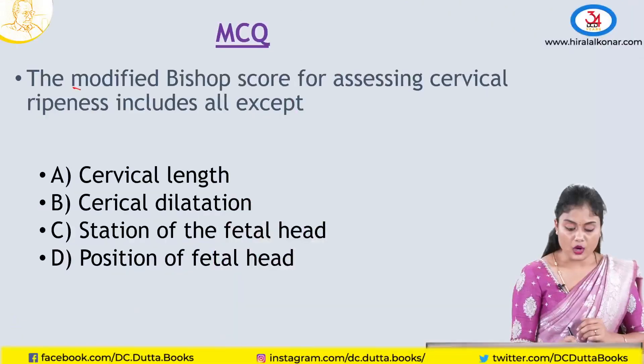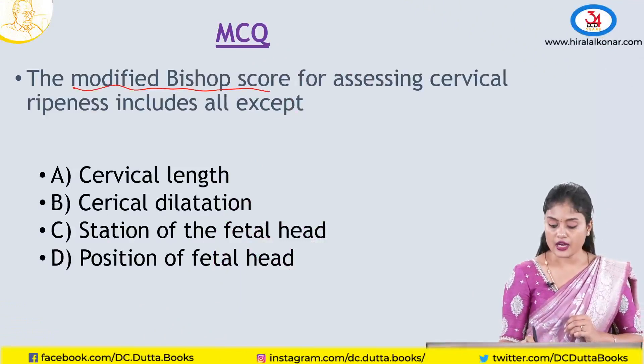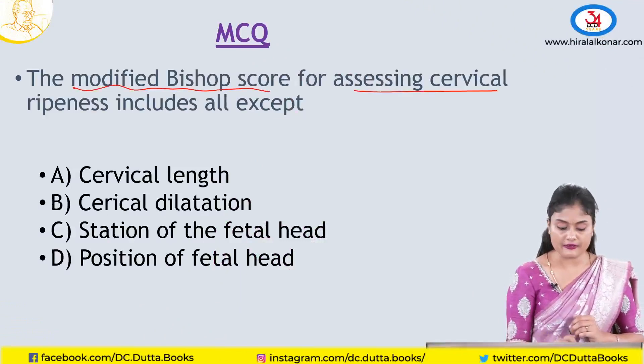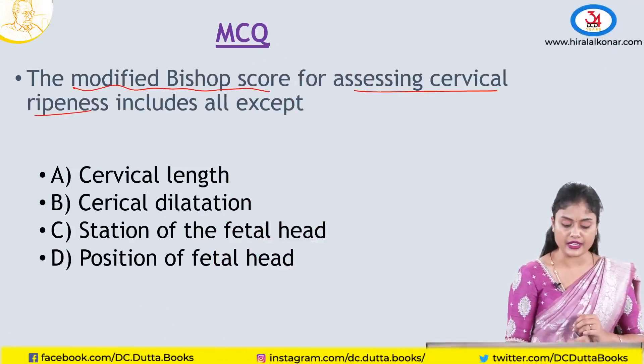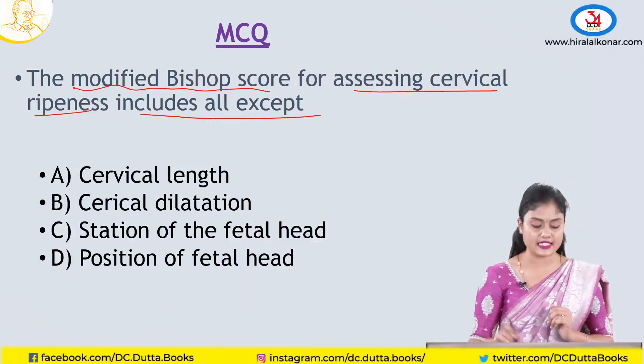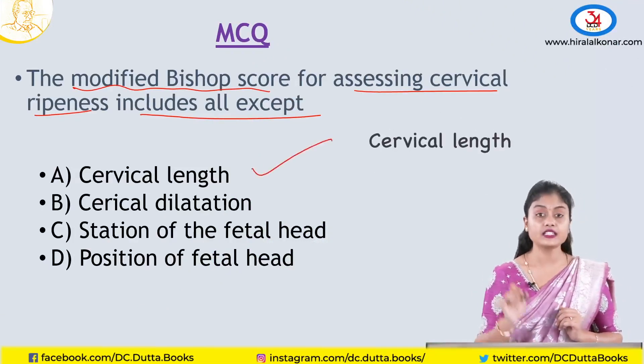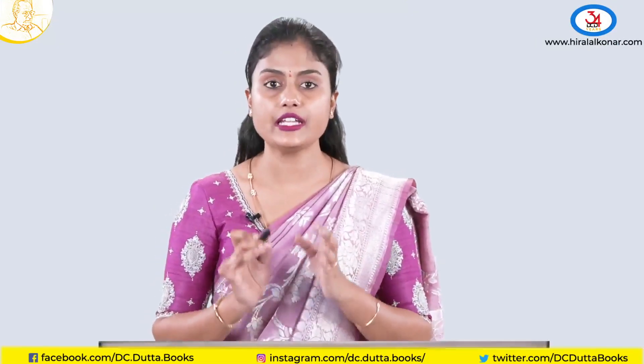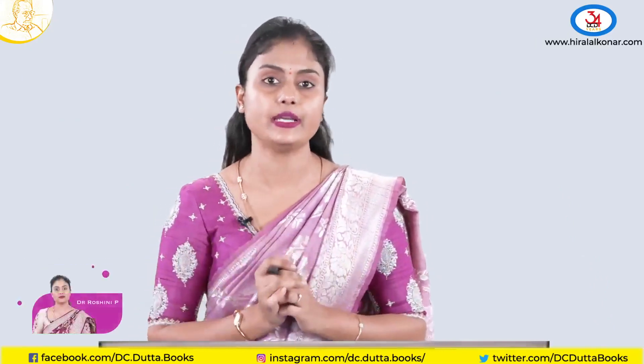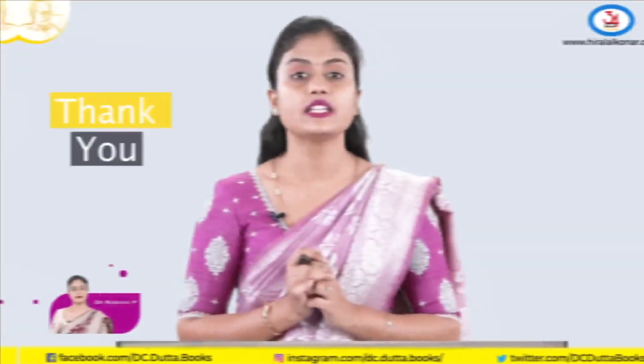Before concluding, let us see if you can answer this: the modified Bishop's score for assessing cervical ripening includes all of the following except — cervical length. I hope you understood this class on induction of labor and you'll be able to answer in your exams and apply it practically in your labor room. Thank you.